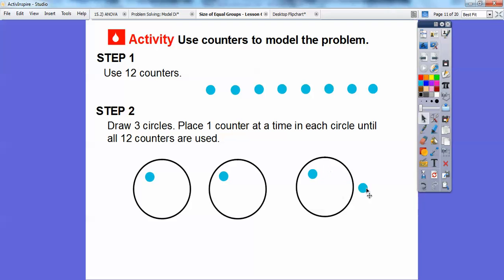So now they all have one and so we're going to put another one there, put another one over here, and we're just making sure one at a time in each circle until we're all done with those 12 counters. So they all have two now, so now I'm going to put three in all of them.